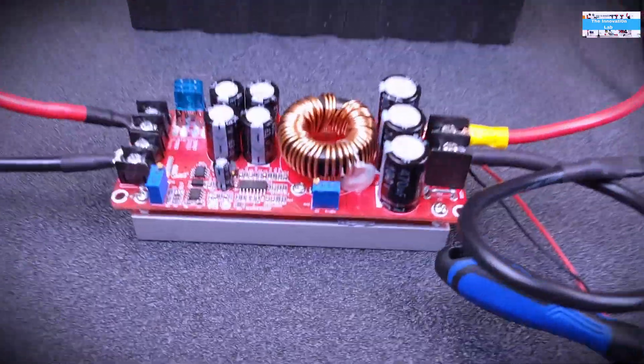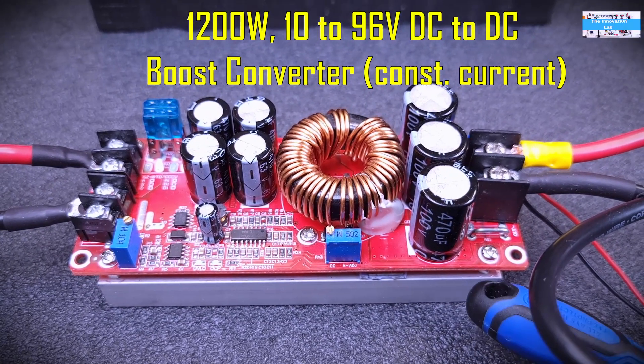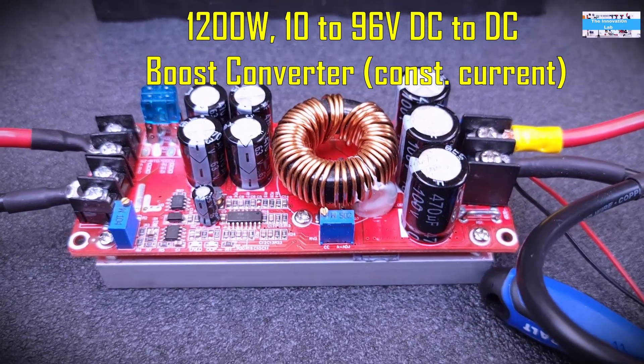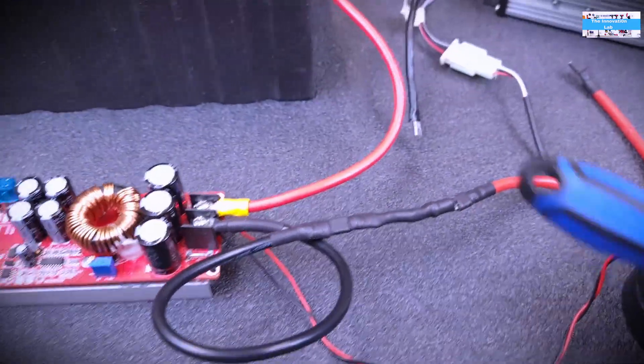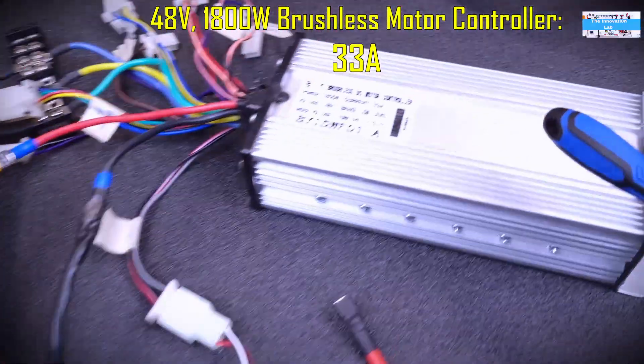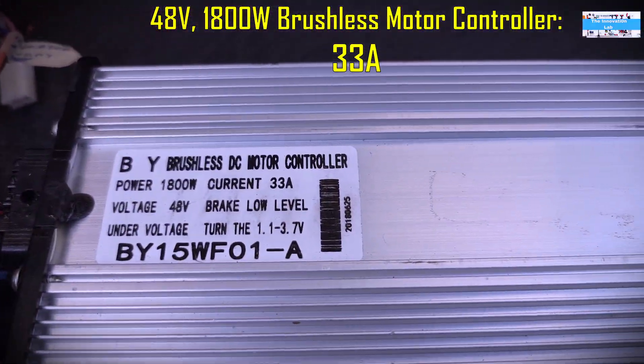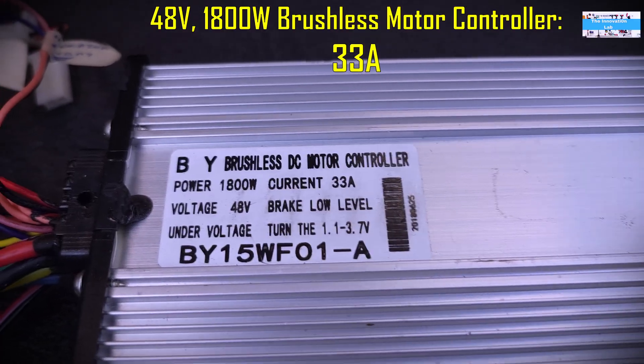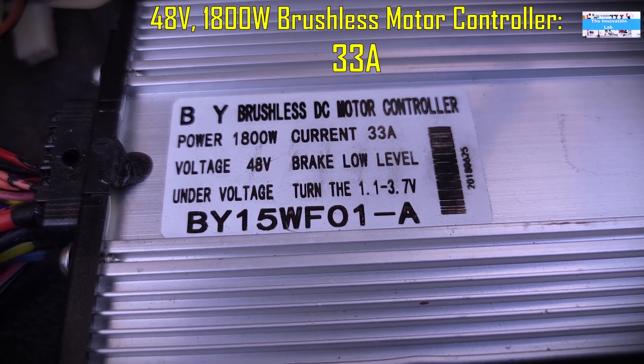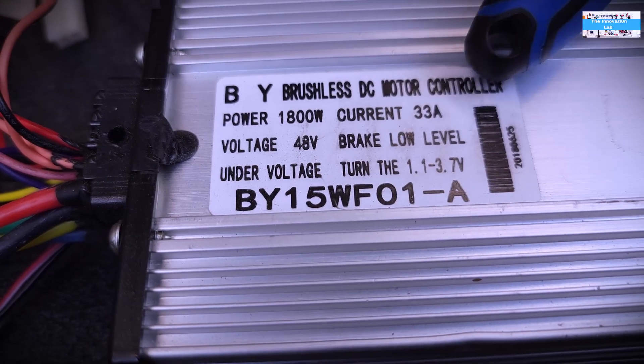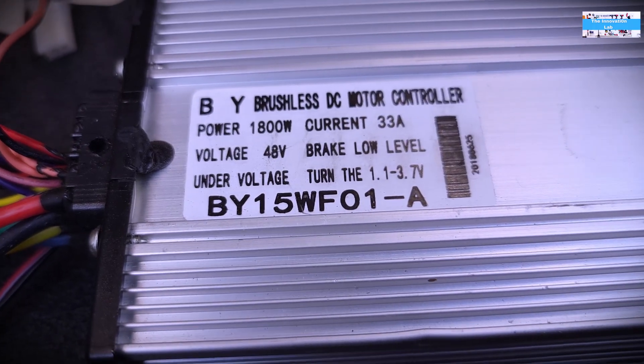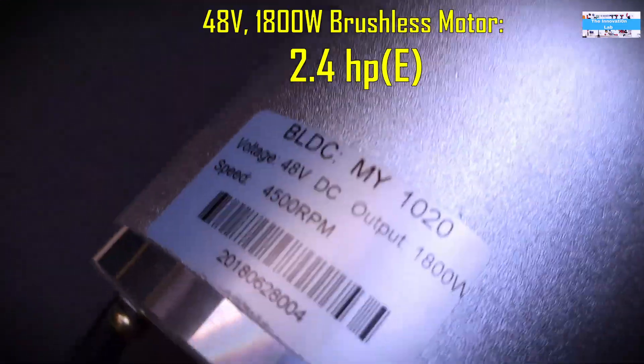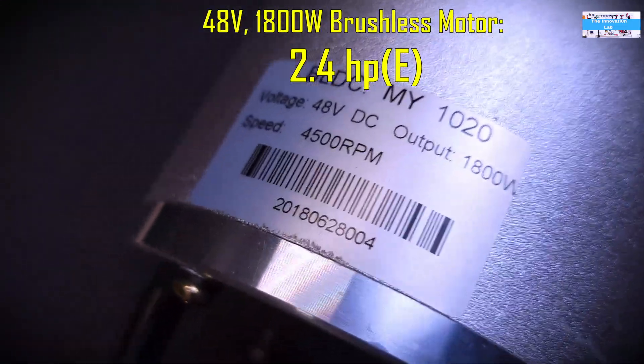Here we have the DC to DC boost converter. Unfortunately what I have now is the 1200 watt model of the converter, and we're going to go from there to our 48 volt brushless DC motor controller. This motor controller is rated for a power output of 1800 watts and output current of 33 amps and an output voltage rating of 48 volts.